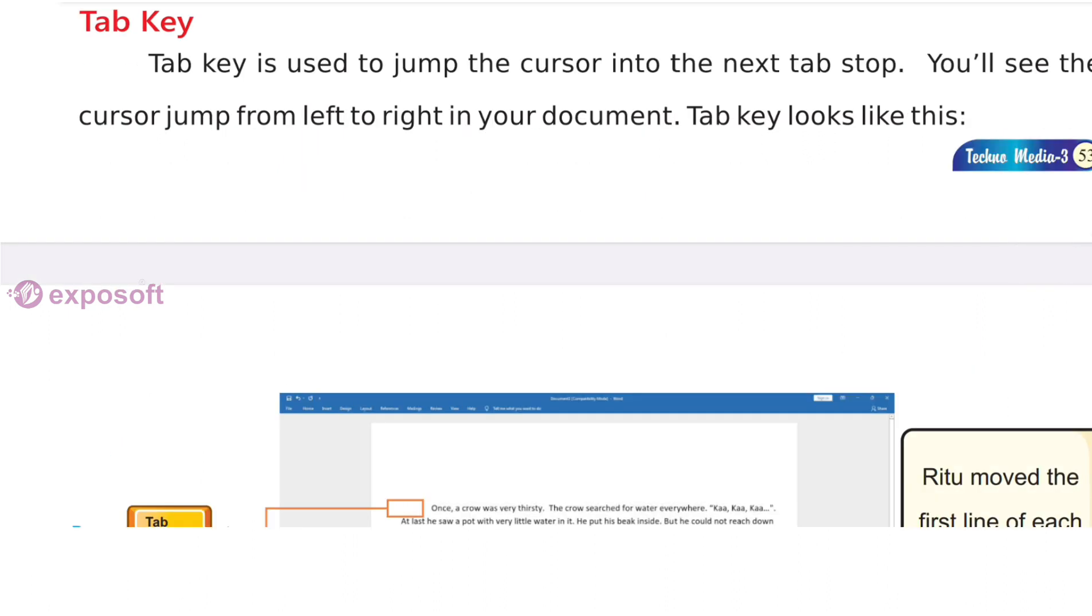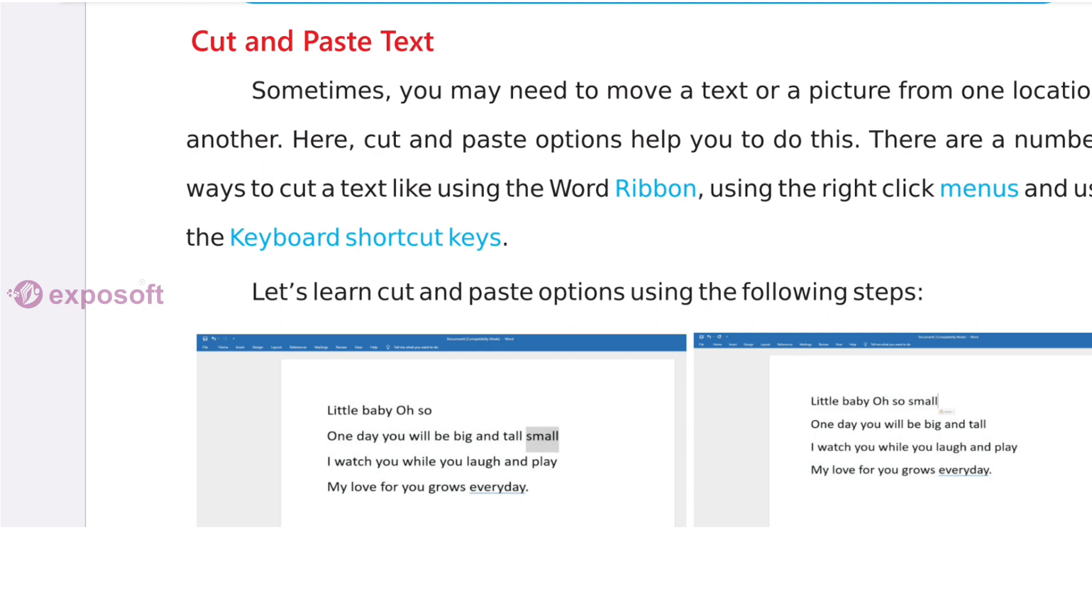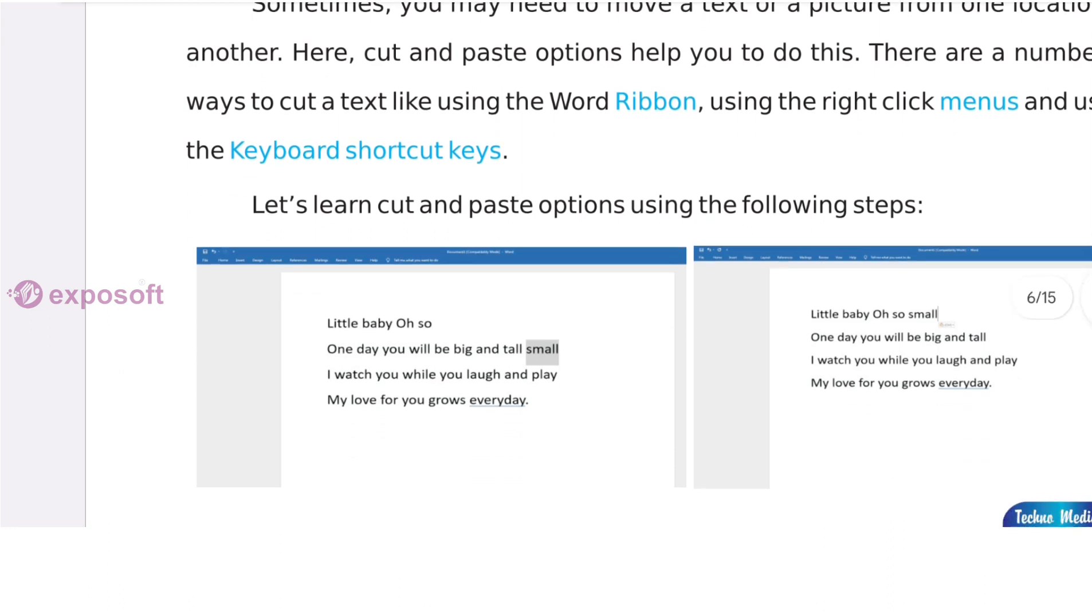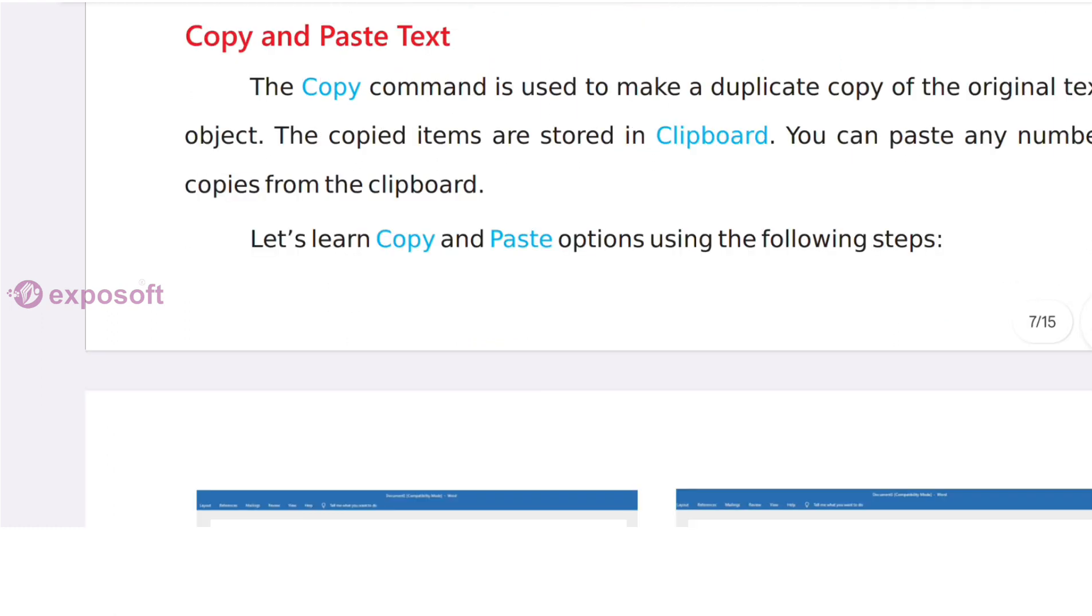Next is cut and paste text. Cut and paste text helps to move a text or picture from one location to another. Copy and paste text: Copy command is used to make a duplicate copy of original text or object.